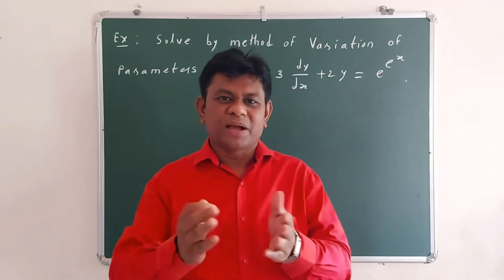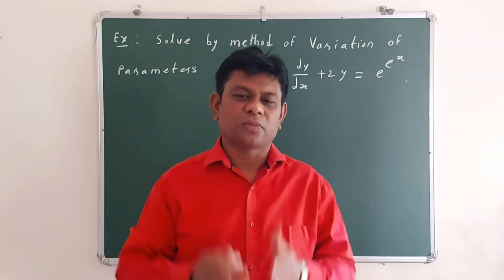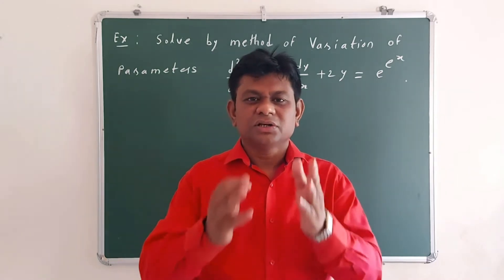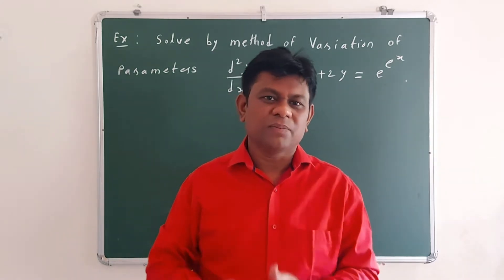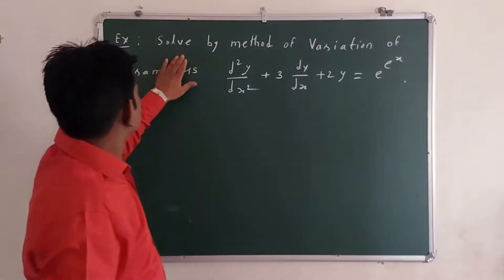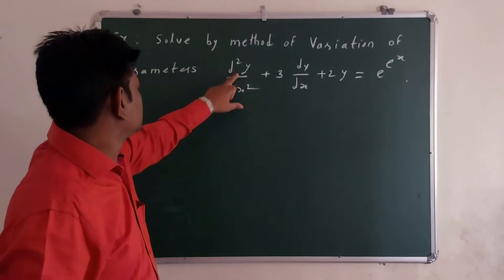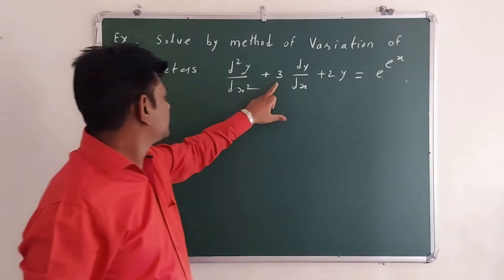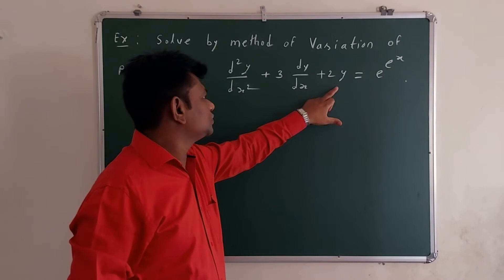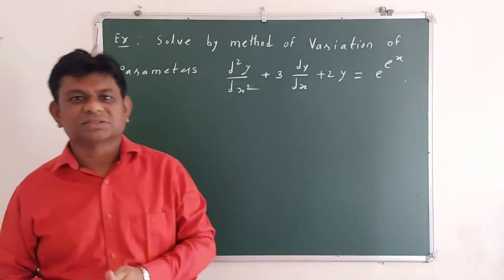Good morning friends. I am back again with one more video lecture on the topic variation of parameter methods. We will solve one example based on the variation of parameters. The example is: solve by method of variation of parameters d²y/dx² + 3·dy/dx + 2y = e^(e^x).